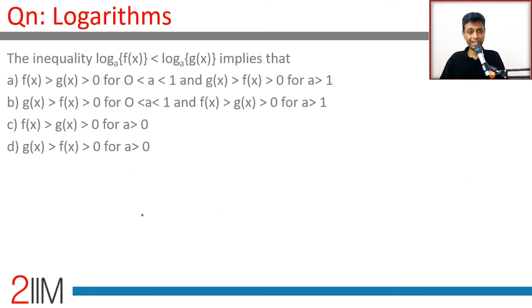Log of f(x) to the base a is less than log of g(x) to the base a implies that... what does it imply? To start with, log is defined only for positive numbers, that means f(x) and g(x) have to be positive.